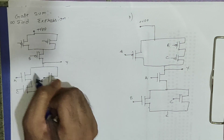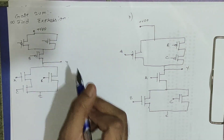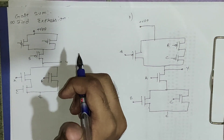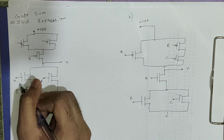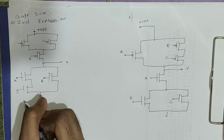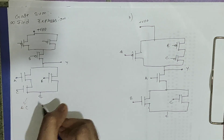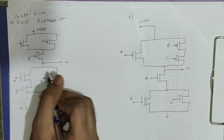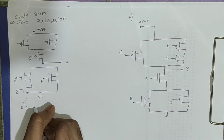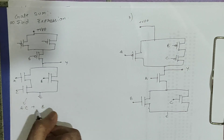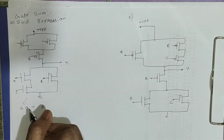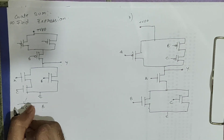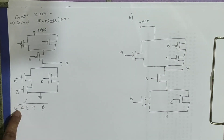Now we will see the gate sum. We are given a circuit and need to find its expression. As mentioned, we always focus on NMOS. In one branch, NMOS is connected in series, giving A·C. These two branches are connected in parallel giving OR between them, plus B. So at the output we get (A·C + B) bar.